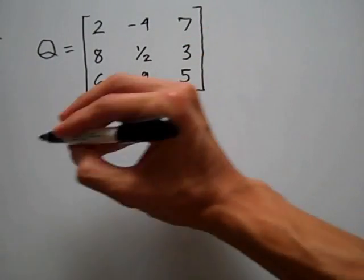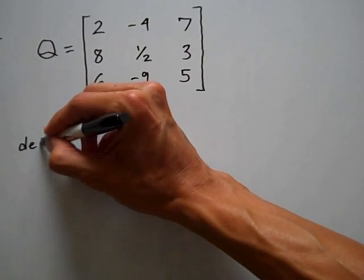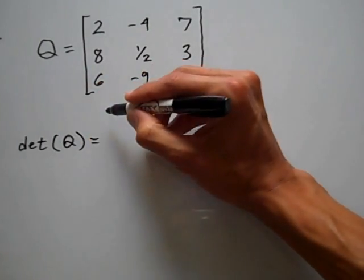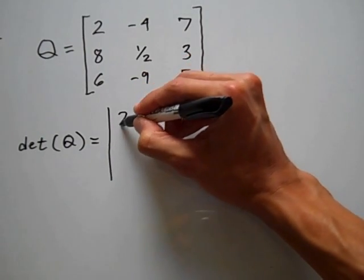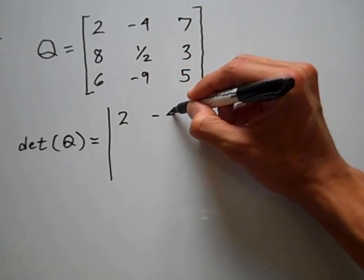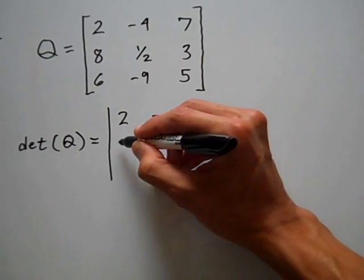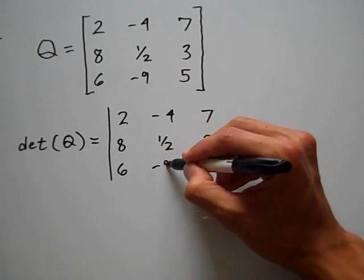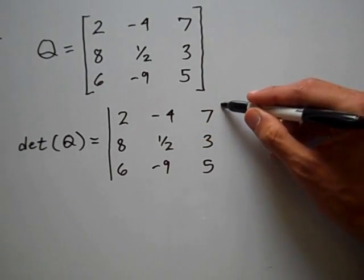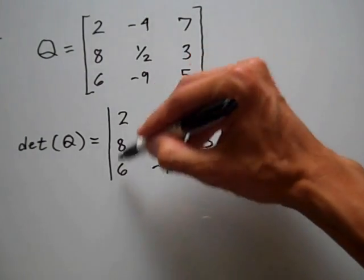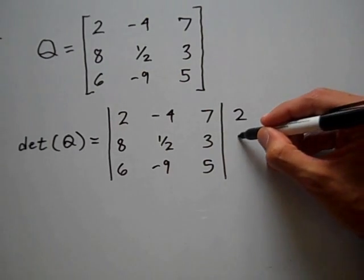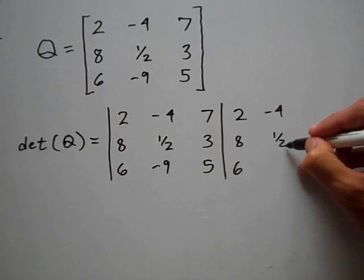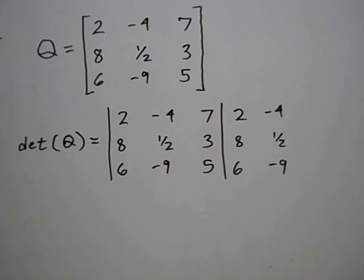Now I want to find the determinant of matrix Q. I'm going to rewrite this 3 by 3 matrix so it has 2, negative 4, 7 along the first row, 8, 1 half, 3 along the second row, and 6, negative 9, and 5 along the third row. Now these first two columns I'm going to recopy over here: 2, 8, 6, negative 4, 1 half, and negative 9.